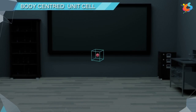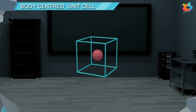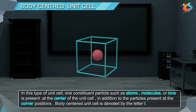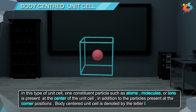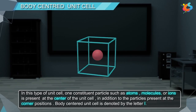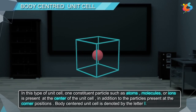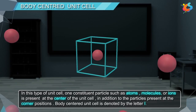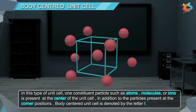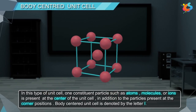Body Centered Unit Cell: In this type of unit cell, one constituent particle — such as atoms, molecules, or ions — is present at the centre of the unit cell, in addition to the particles present at the corner positions. Body Centered Unit Cell is denoted by the letter I.